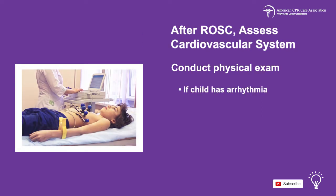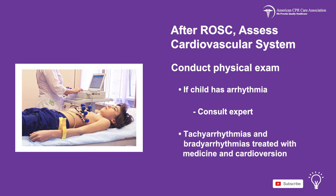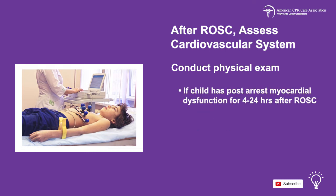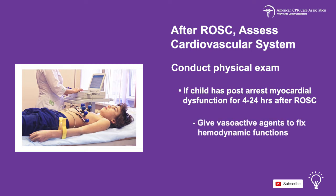Give the child a vasopressor to constrict their blood vessels if they have vasodilation-induced hypotension. If the child has any arrhythmias, consult an expert. Tachyarrhythmias and bradyarrhythmias should be treated with medicine and cardioversion. If the child has post-arrest myocardial dysfunction for 4 to 24 hours after the return of spontaneous circulation, give them vasoactive agents to fix hemodynamic functions and maintain blood pressure and perfusion.